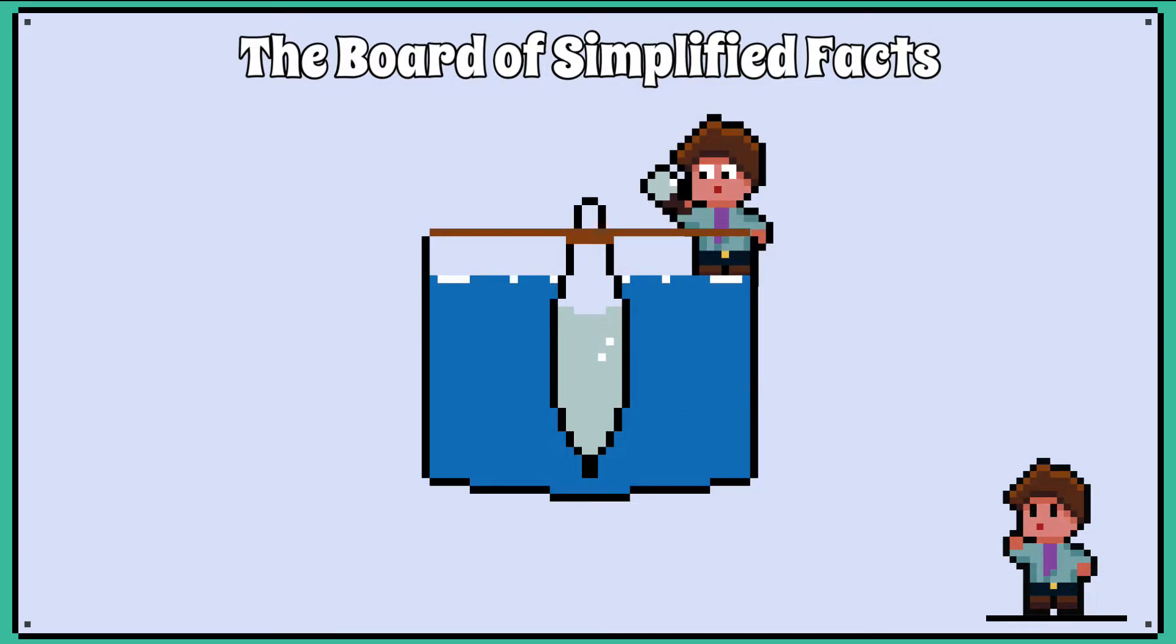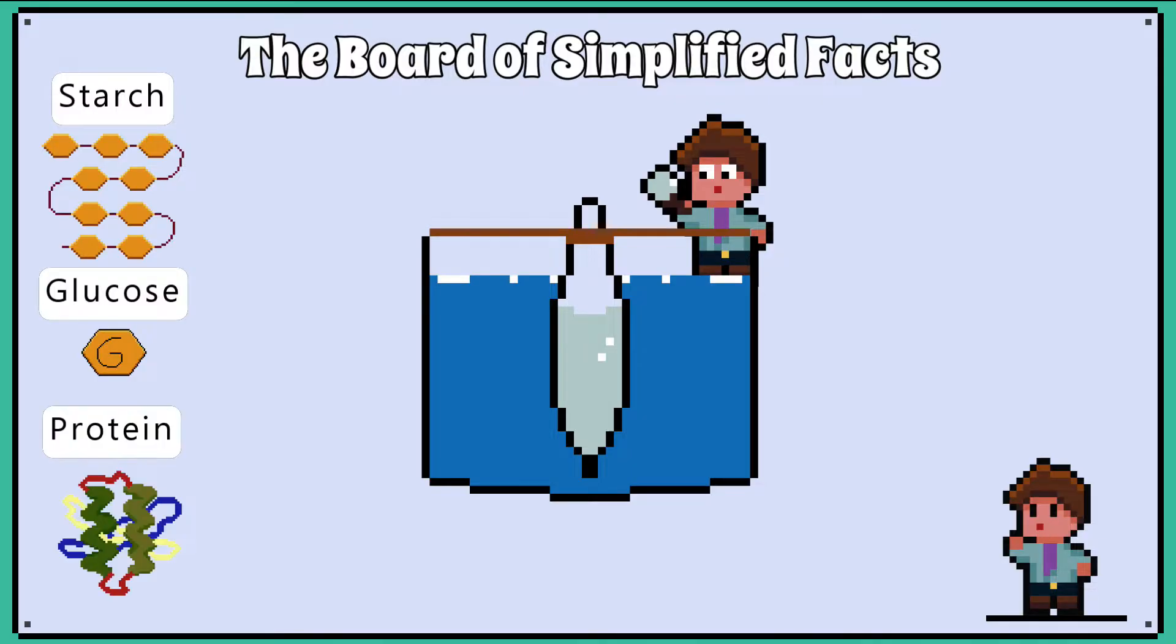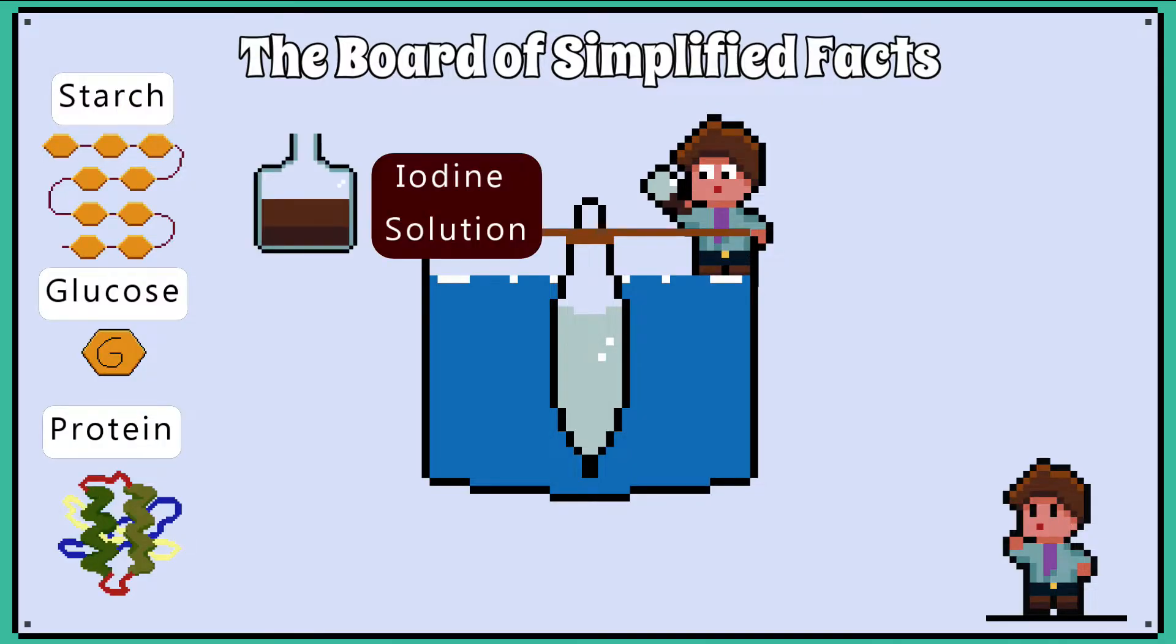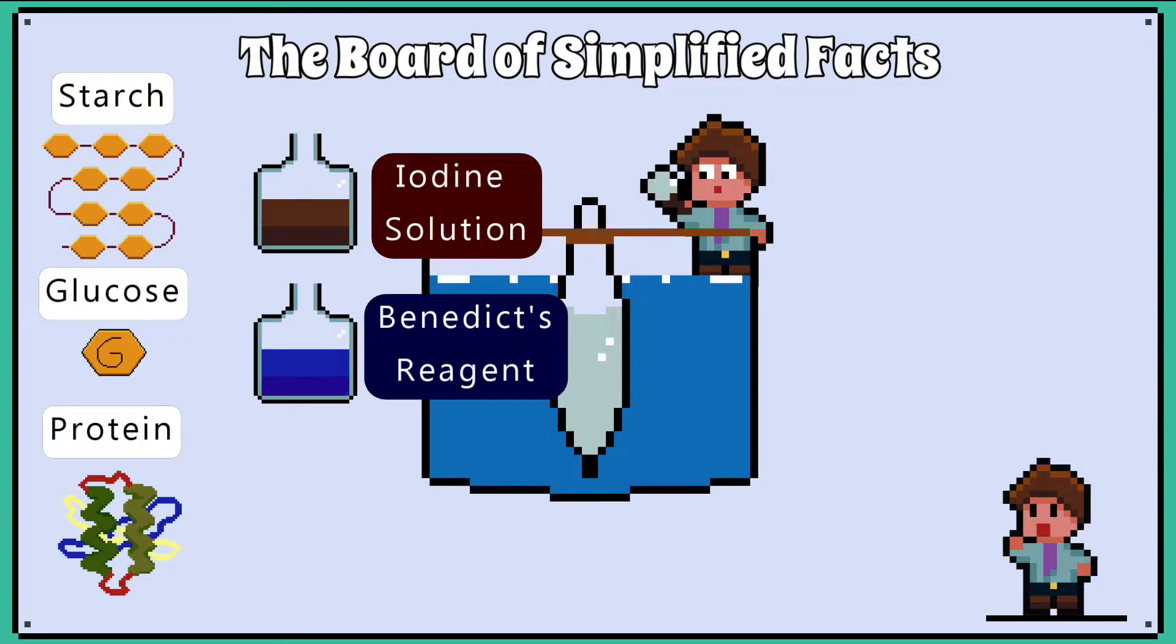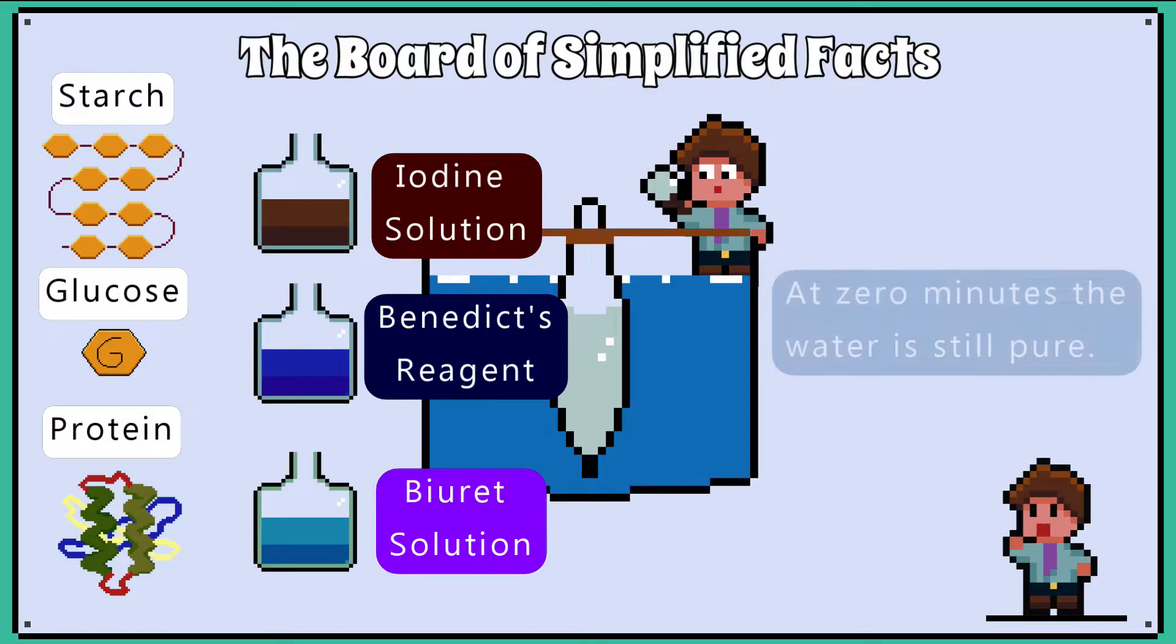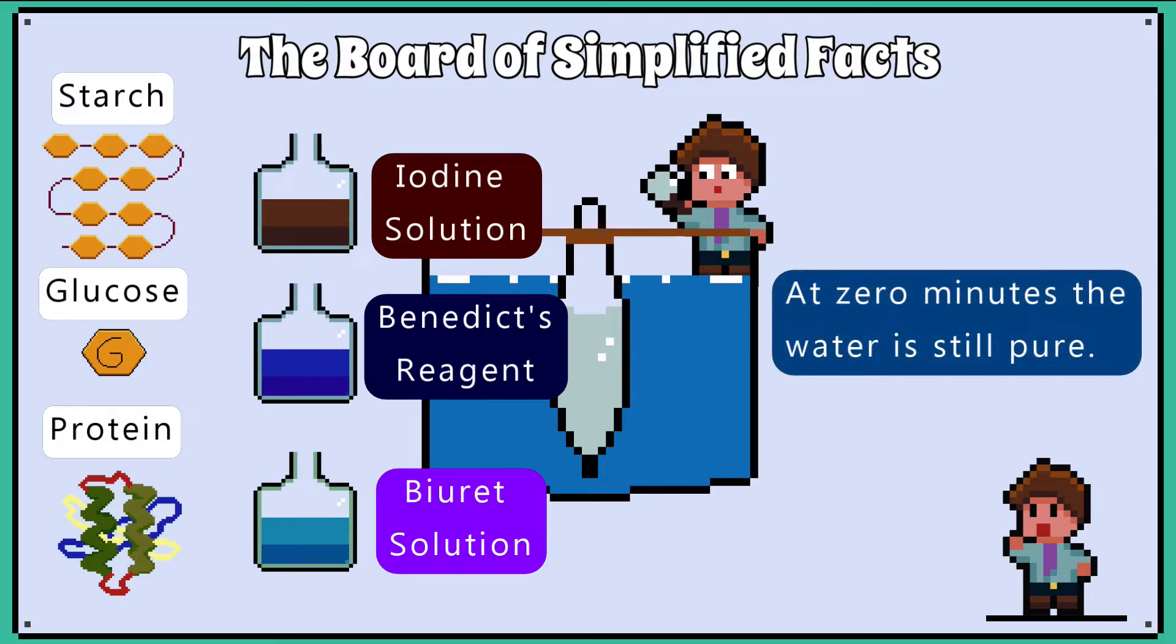We will test the water immediately for starch, glucose and protein using the food tests. Remember we use iodine solution to test for starch, Benedict's reagent to test for glucose, and Biuret's solution to test for protein. All the tests should come up as negative as there's been no time for anything to diffuse into the pure water yet.